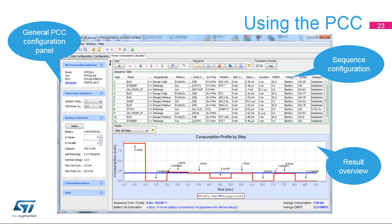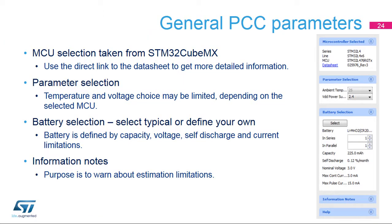The Power Consumption Calculator is the fourth tab in the STM32CubeMX main window. The window is divided into several panes. The General Configuration pane summarizes the typical operating conditions and the MCU type currently selected. The second pane displays the simulation sequence and its controls. There is no button to execute the simulation — the results are available instantaneously. The General PCC Configuration pane is mostly informative, summarizing the selected MCU and the default power source. Parameters such as temperature and voltage may be defined depending on the MCU selected and the available data. The Battery Selection pane is used to select or define a battery type.